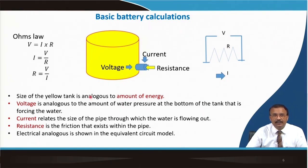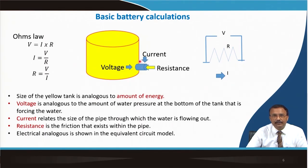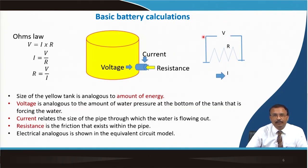Voltage is analogous to the water pressure at the bottom of the tank — a full tank has more pressure, meaning higher voltage, forcing the water out. Current relates to the size of the pipe through which water flows. Resistance is the friction within the pipe: a bigger pipe diameter means lower resistance and more current can flow. In the equivalent circuit model, voltage is applied across a resistance and current flows — that is the battery working.